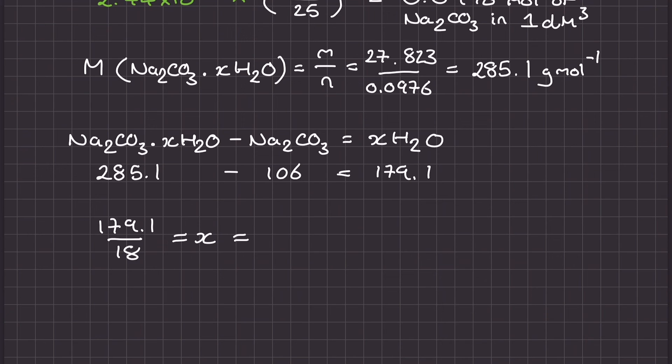I then divide this by 18, which is the molar mass of water, and I can determine that my value of X, so the number of waters of crystallization to the nearest whole number, was 10.